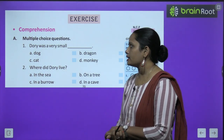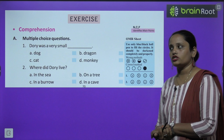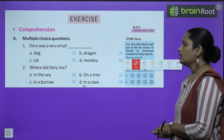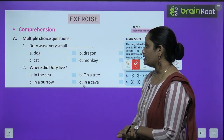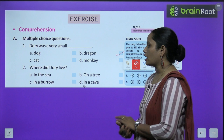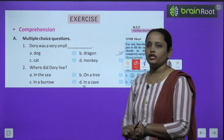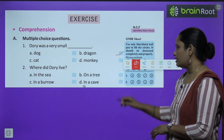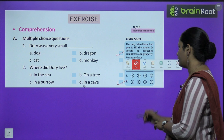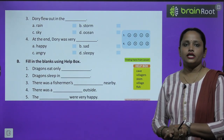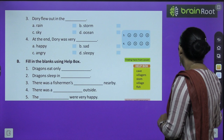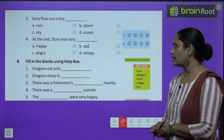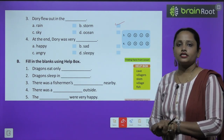Now let's move on to the book exercise — multiple choice questions. First question: Dory was a very small — dog, dragon, cat, or monkey? It was a dragon. Second: Where did Dory live? In the sea, on a tree, in a burrow, or in a cave? She lived in a cave. Third: Dory flew out in the — rain, storm, sky, or ocean? The correct answer is storm.